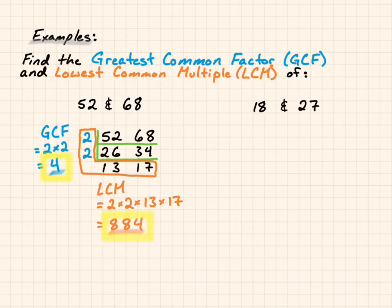Now let's go on to the next example. That's 18 and 27, finding the greatest common factor and lowest common multiple. We set them up side to side and draw our L.